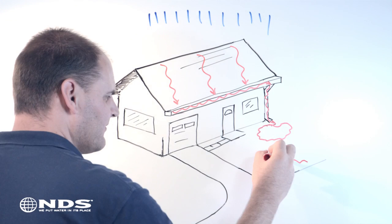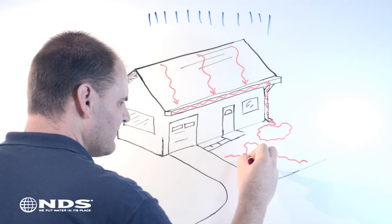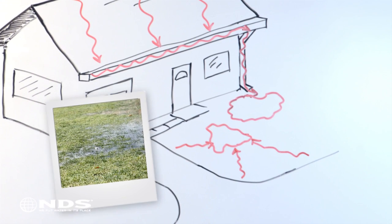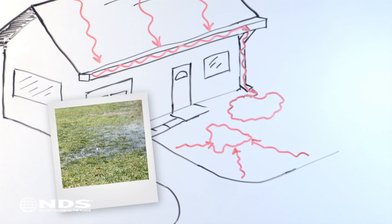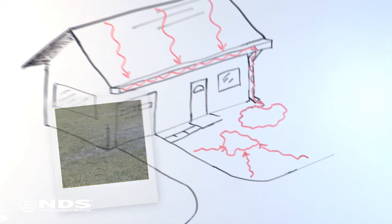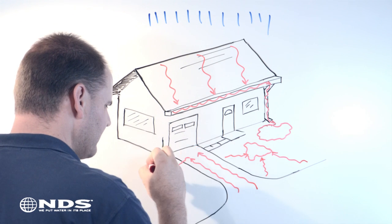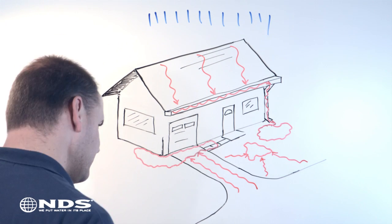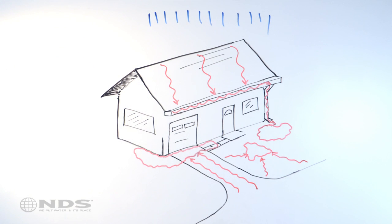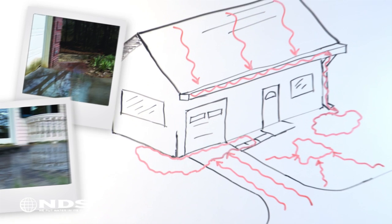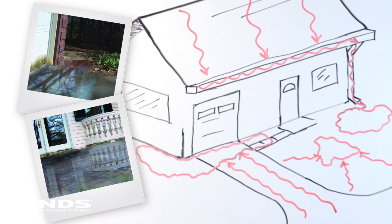Another common problem is rain falling in your yard which collects and puddles in low spots. Some homes have driveways, patios, or walkways that slope towards the house, which results in water getting into the home or garage every time it rains.